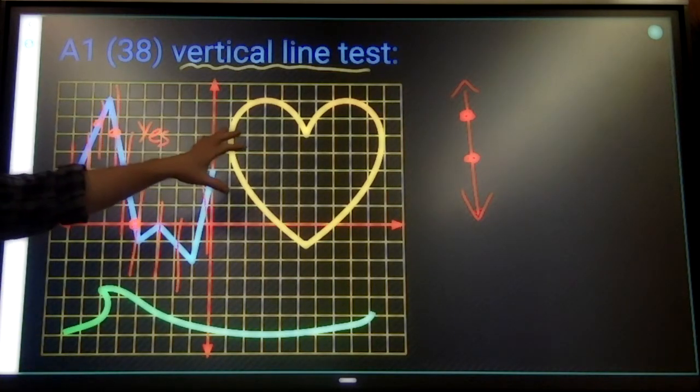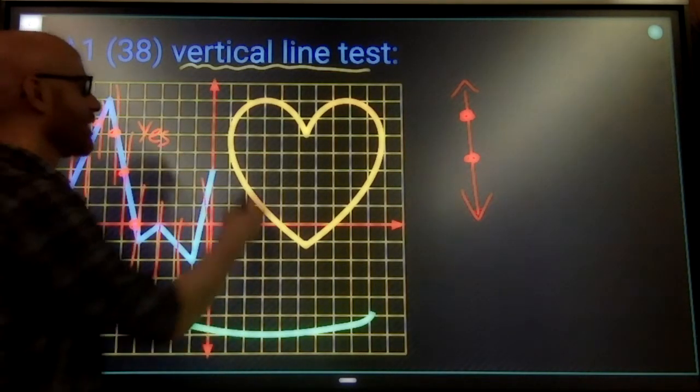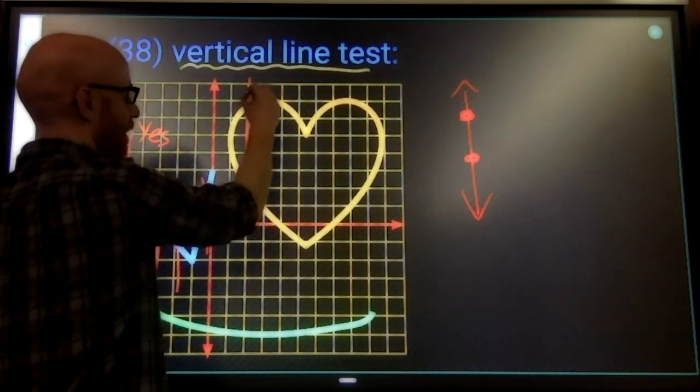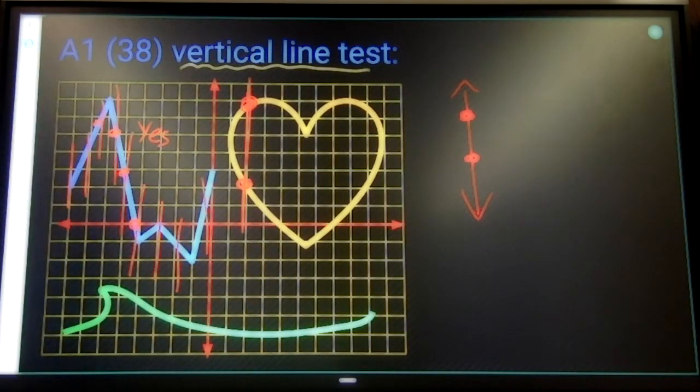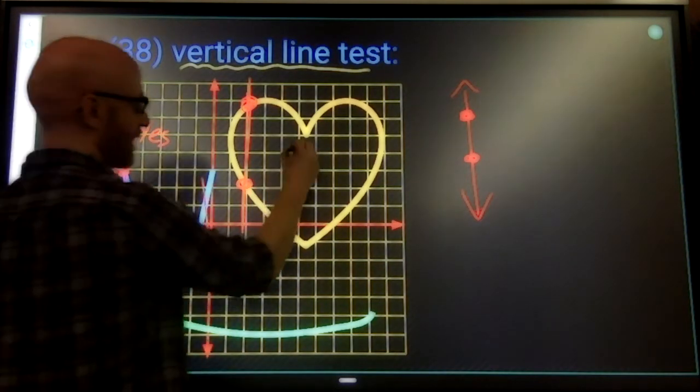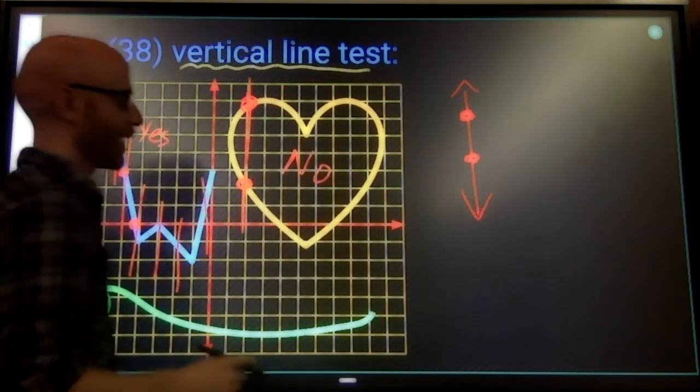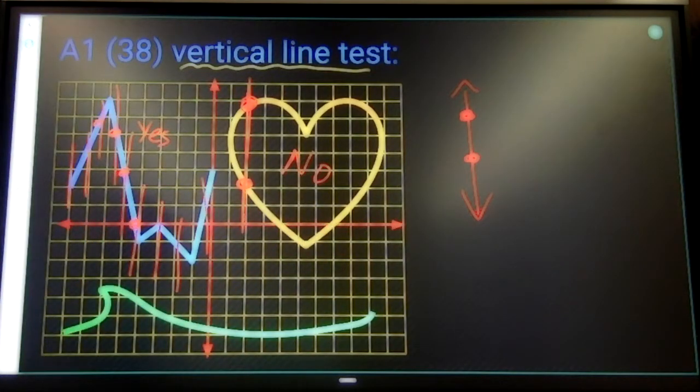That heart, it's easy for me to find a spot where I can draw a vertical line, crosses two points. So this heart is not a function. It is a relation, but it's not a function.